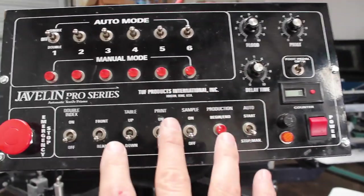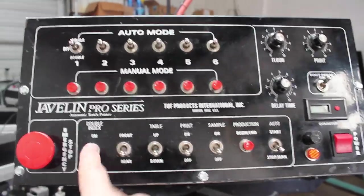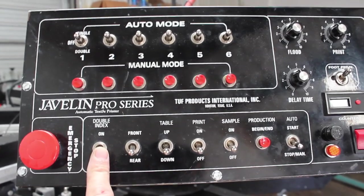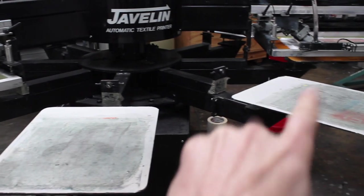With the control panel, we have our emergency stop. On our particular press, the Javelin, it does have the feature to double index, and what the double index feature will do is rotate the pallets two times.